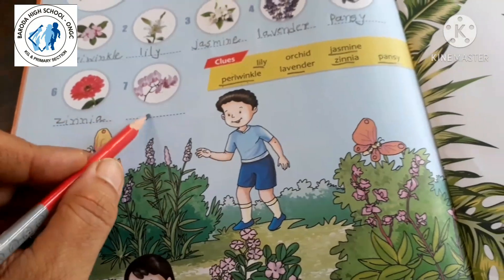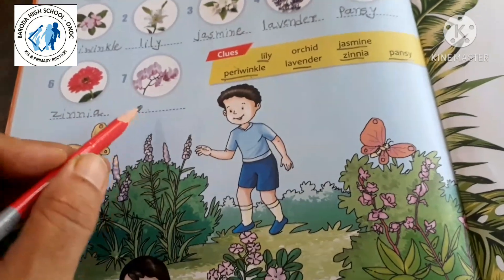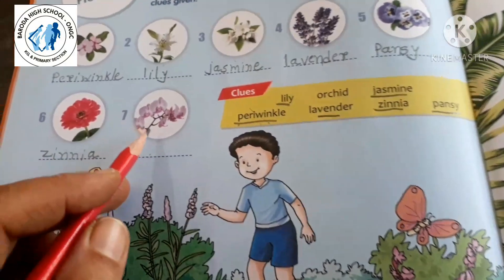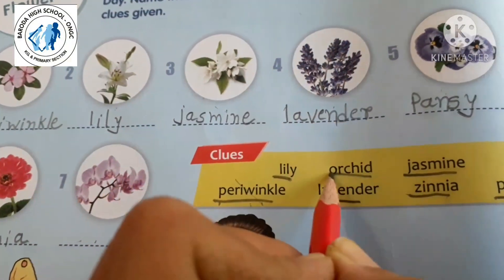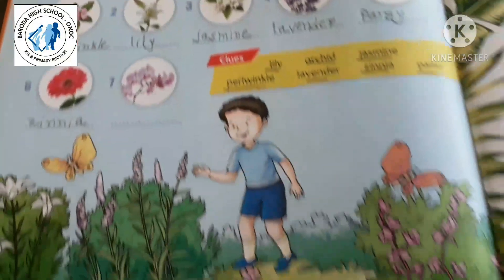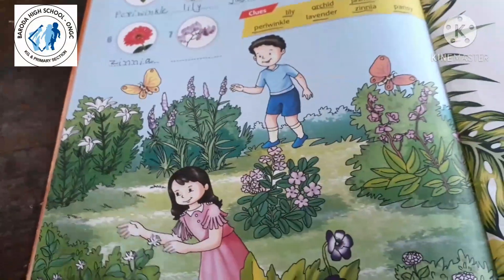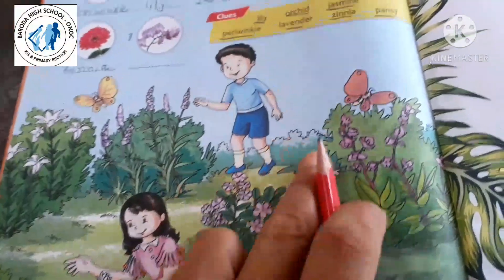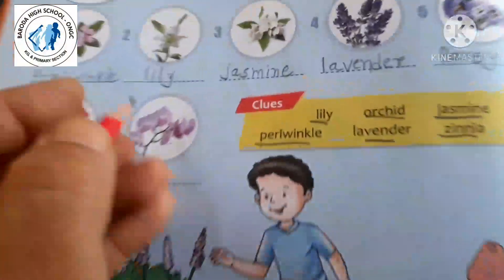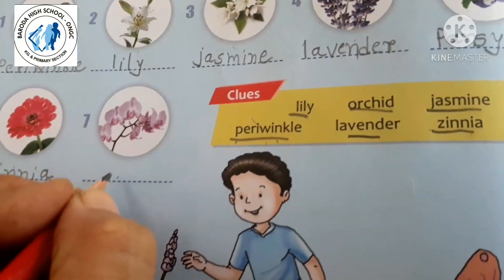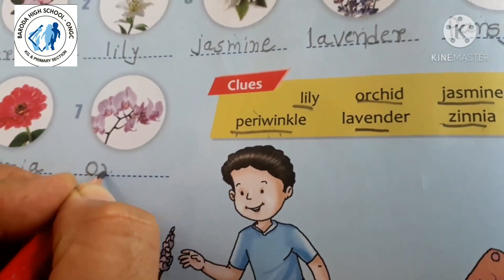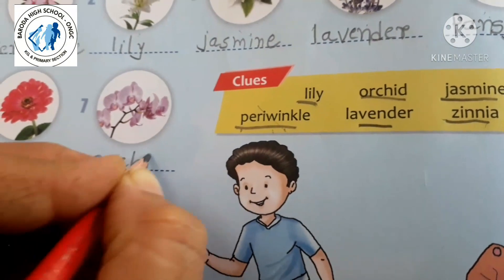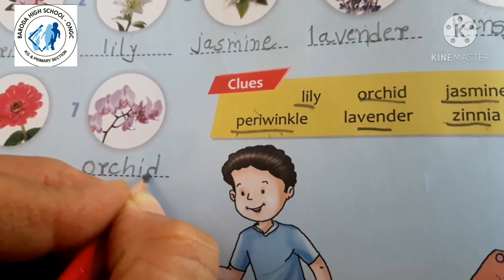And this last one — which one is this? This is orchid. Where is orchid? Here in this picture — this is orchid. Write down here: Orchid.